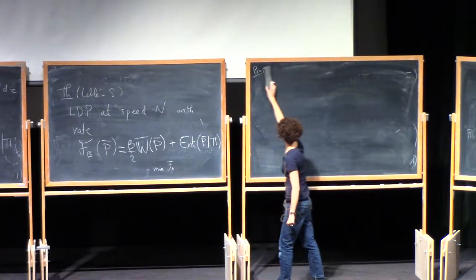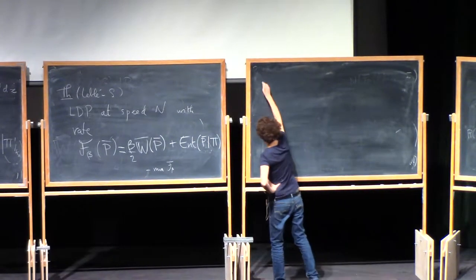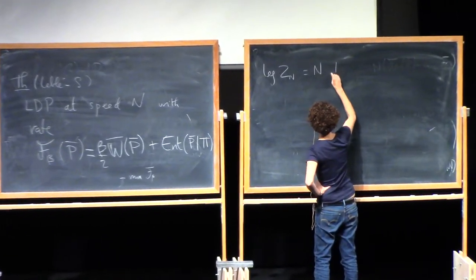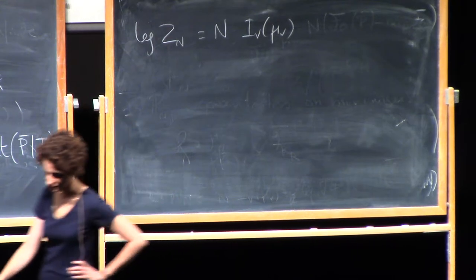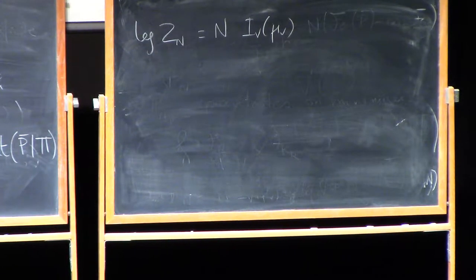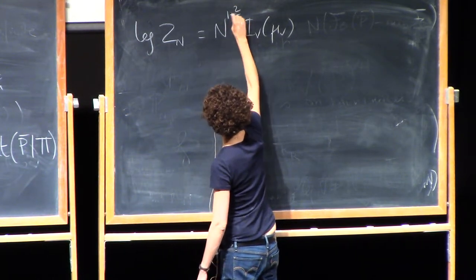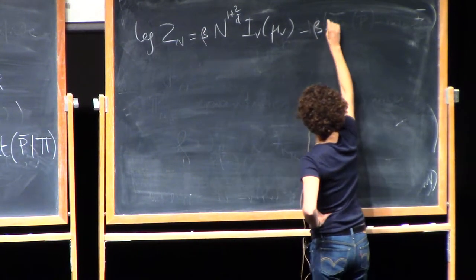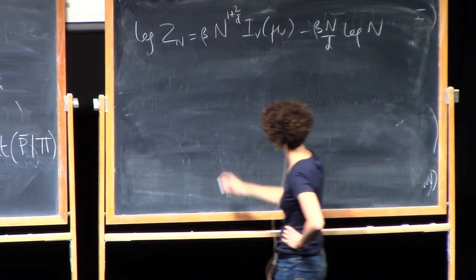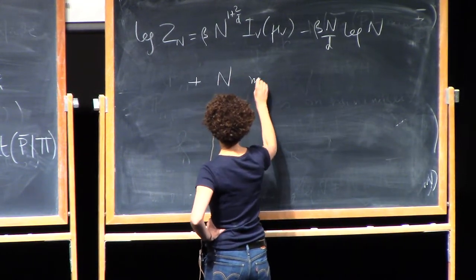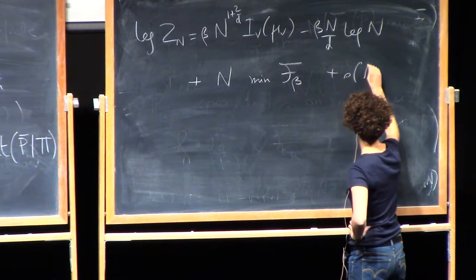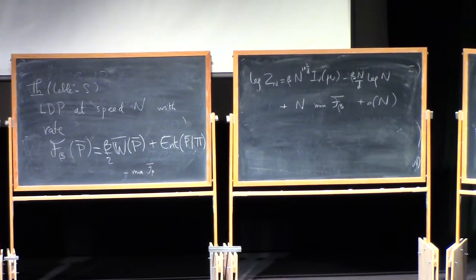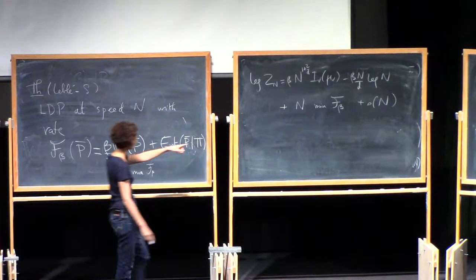Another corollary is that if you have an LDP of this formula, it goes together with an expansion of log Z. So now we have a next-order expansion of log Z. There are leading order terms — n² times I_V of mu_V — and in dimension larger than 3, if you scale it properly. Then there are n log n terms with beta everywhere. Then there is beta n over d log n, which is there only in the logarithmic cases. And now we know what's next: there is n times the minimum of F_beta. So we have the existence of what you can call a thermodynamic limit — the free energy per number of particles.